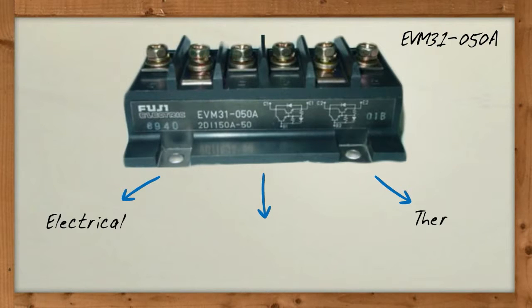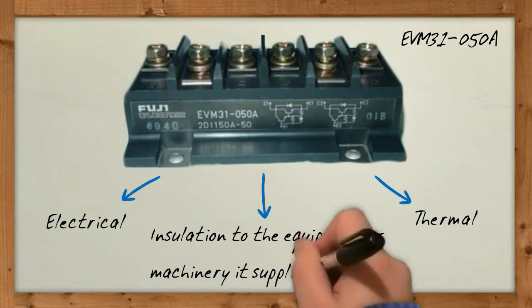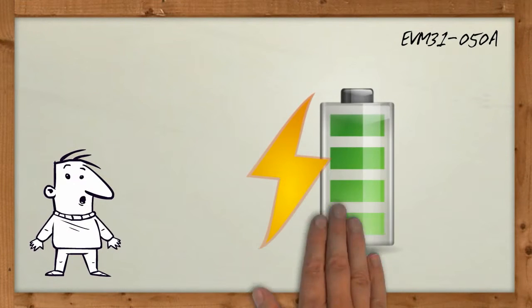EVM31050A provides electrical and thermal contacts and insulation to the equipment or machinery it supplies power to, providing a higher power density.